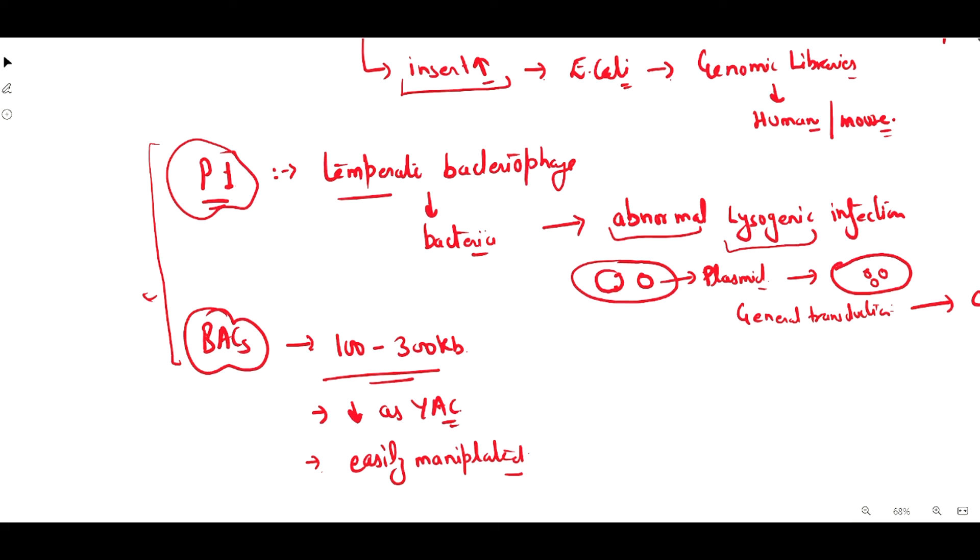In this section we discussed P1 and BAC cloning vectors. You should know the difference between them. PAC contains both parts - it contains the part of phage and the part of plasmid, so it is a combination of plasmid features and phage features.